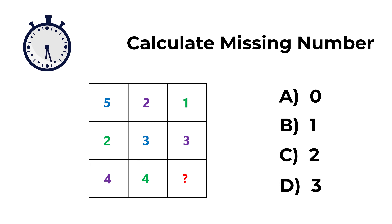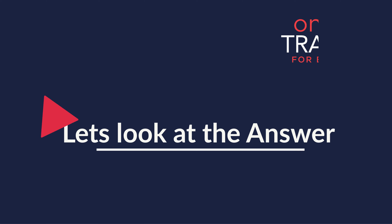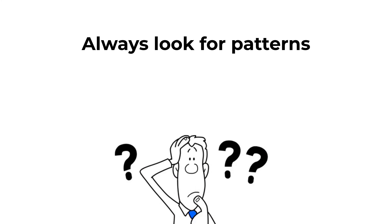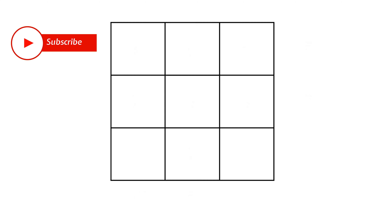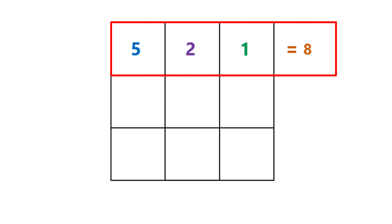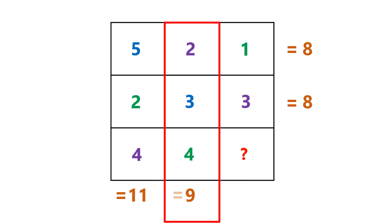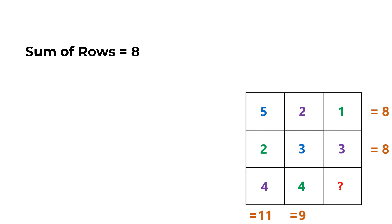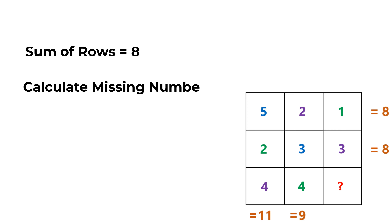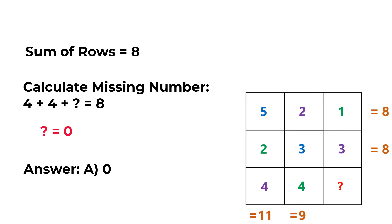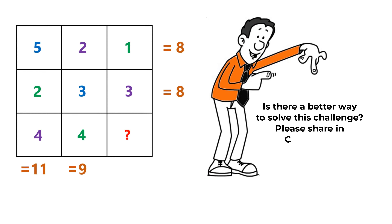Let's solve this challenge together. Always look for patterns — in this case, patterns inside rows and columns. The sum of 5 plus 2 plus 1 equals 8. The sum of 2 plus 3 plus 3 also equals 8. Checking columns: 5 plus 2 plus 4 equals 11, and 2 plus 3 plus 4 equals 9 — so no column pattern. Using the row pattern, if each row sums to 8, then 4 plus 4 plus the missing number equals 8. So the missing number is 0. The correct choice is A.